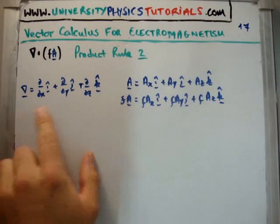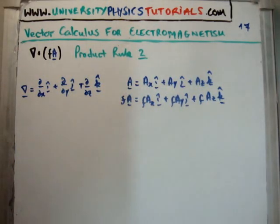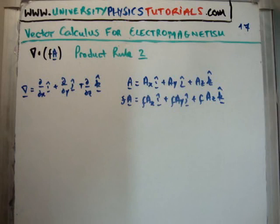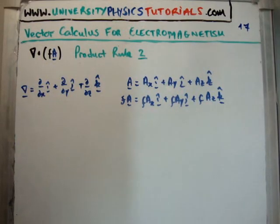I've just defined my nabla operator as normal, my a vector, and I've multiplied in my scalar f by our a vector. So what we need to do now is note that if we're taking the divergence, or the dot product, we're going to get back a scalar field. Alright, so let's go ahead and calculate it.